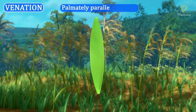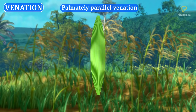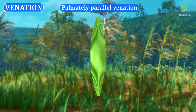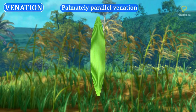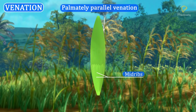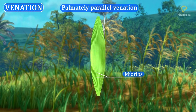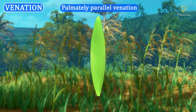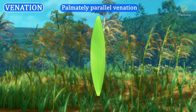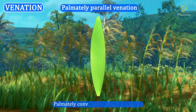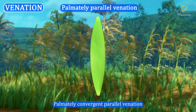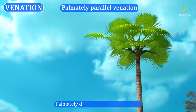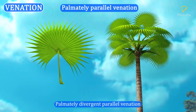Palmately parallel venation: In this venation, the lamina has two or more mid-ribs that run upwards. It is divided into two categories: palmately convergent parallel venation and palmately divergent parallel venation.